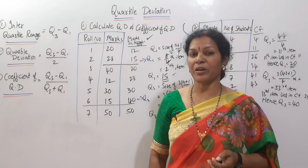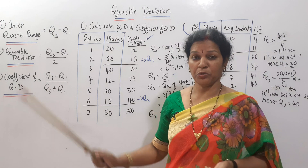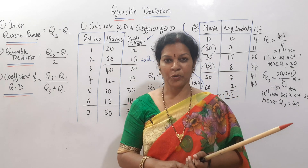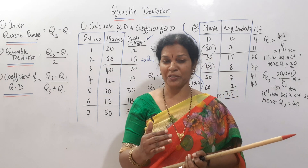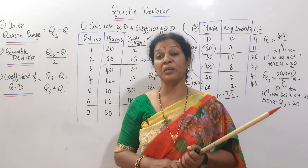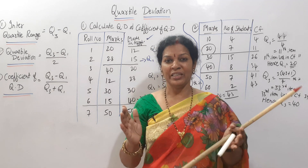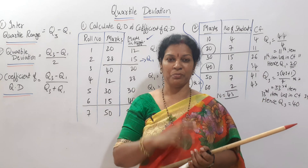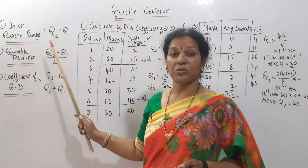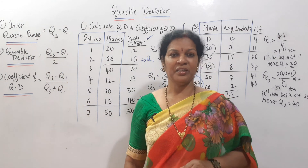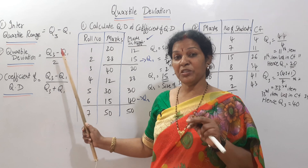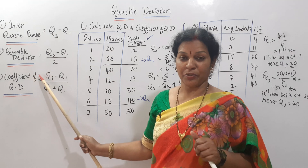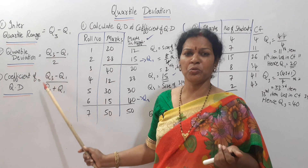The Interquartile Range formula is Q3 minus Q1. Q1 represents the 25th percentile, i.e., the 1/4th position, and Q3 represents the 75th percentile, i.e., the 3/4th position. We use these to work out the values for the Interquartile Range.